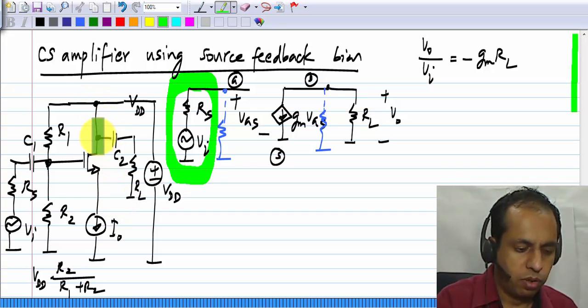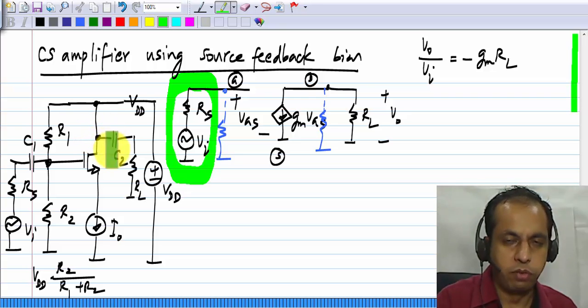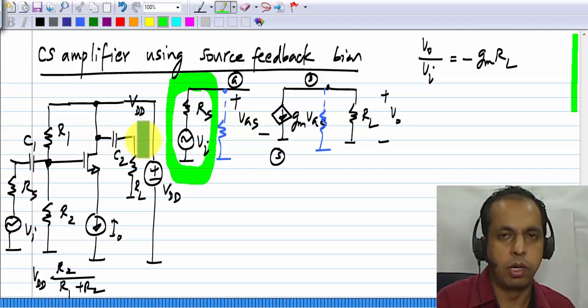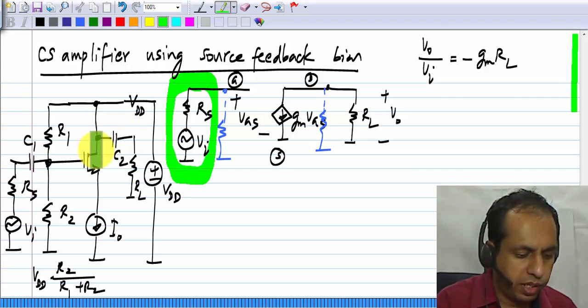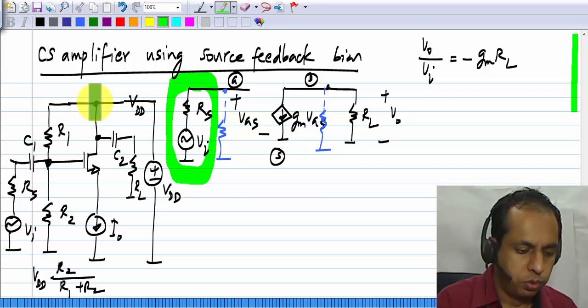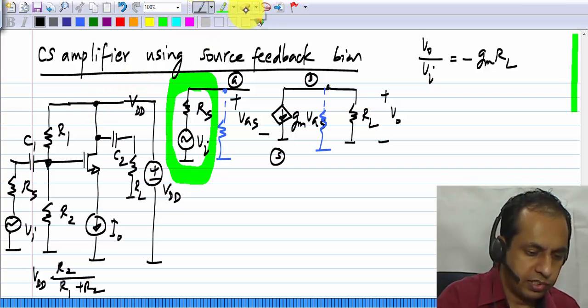So, that means that this will be connected directly to ground. So if it is connected to ground, then the signal voltage swing here will be zero. So that cannot be permitted. Obviously, we want some signal to come out of the amplifier.